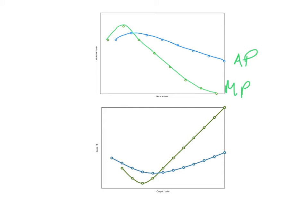This is why the cost curves look as if they are a mirror image. When marginal cost is lower than average variable cost — the green tick here is marginal cost and the blue curve here is average variable cost — diminishing returns has not set in yet. Once marginal cost rises above average variable cost, diminishing returns has set in. They look like they are mirror images of each other.